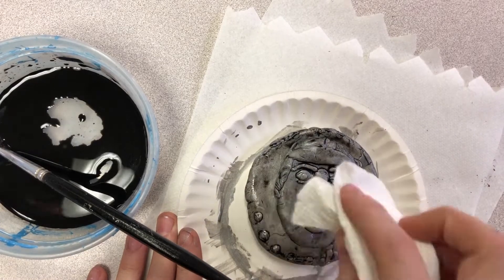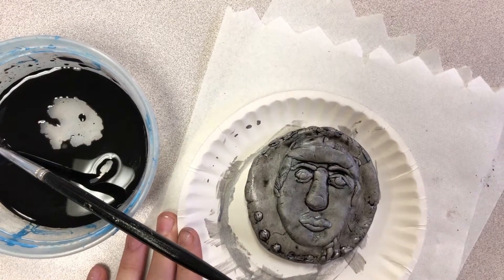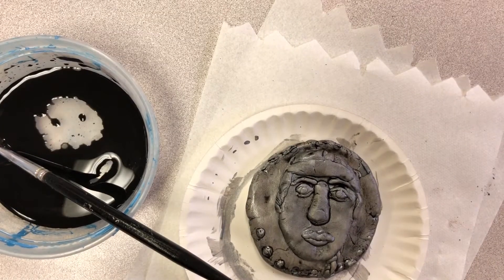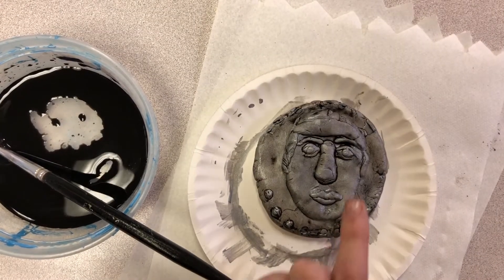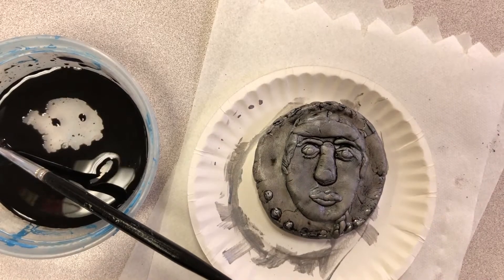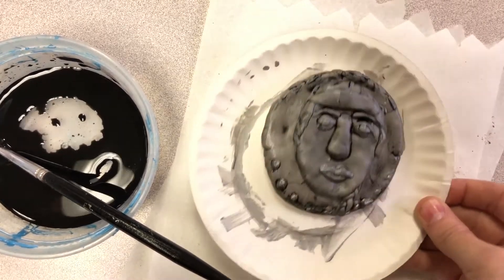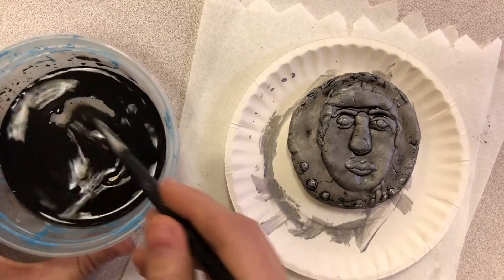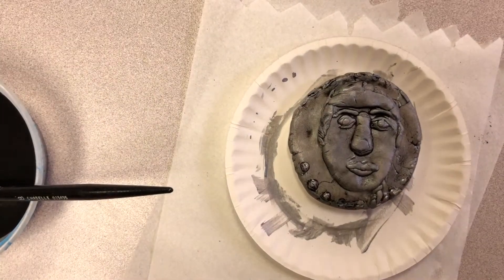And if I want to make the silver shine through a little more, I'm gonna dab it with the paper towel and I'm just gonna let those little, the black, watered-down India ink dry in the crack like that. And then I have my coin with a sort of patina look. And we'll design some sort of background to put it on.